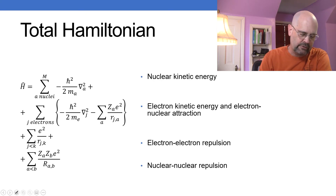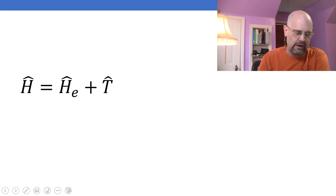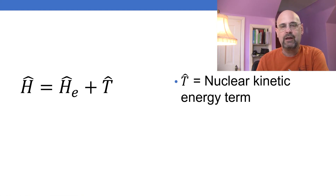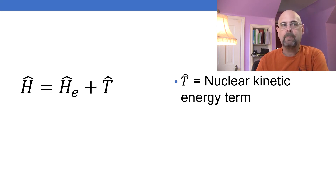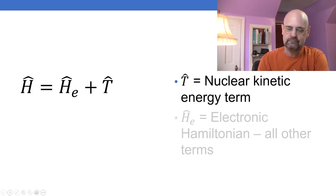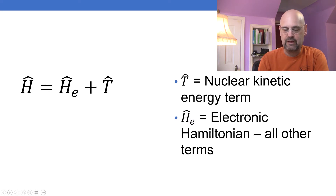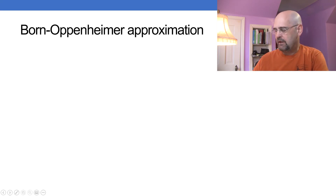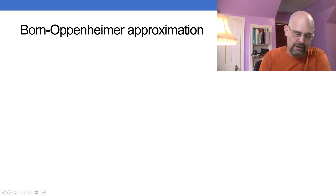We're going to break this up in an interesting way — putting it into an electronic form and a kinetic energy term. T is going to be my nuclear kinetic energy term, and H_E is the electronic Hamiltonian comprising all of the other terms. So the nuclear kinetic energy term, that first term, is the only one we're pulling out. All of the other terms are in the electronic Hamiltonian. The major approximation we're going to make is called the Born-Oppenheimer approximation.